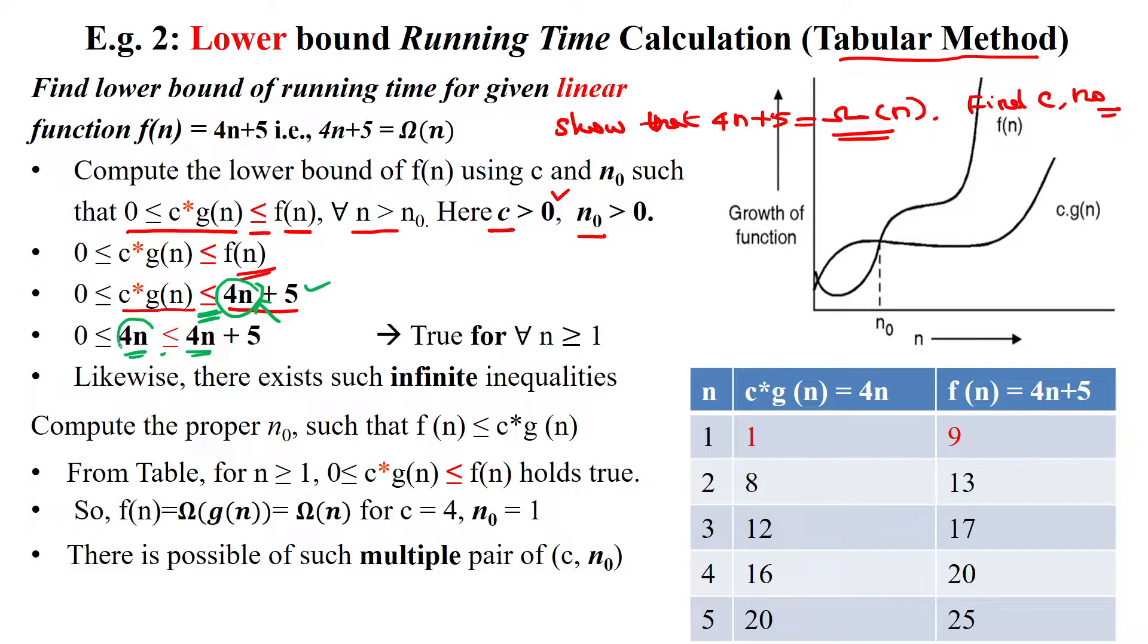We are taking the smaller term or equal term. Here, the equal term for 4n is 4n.